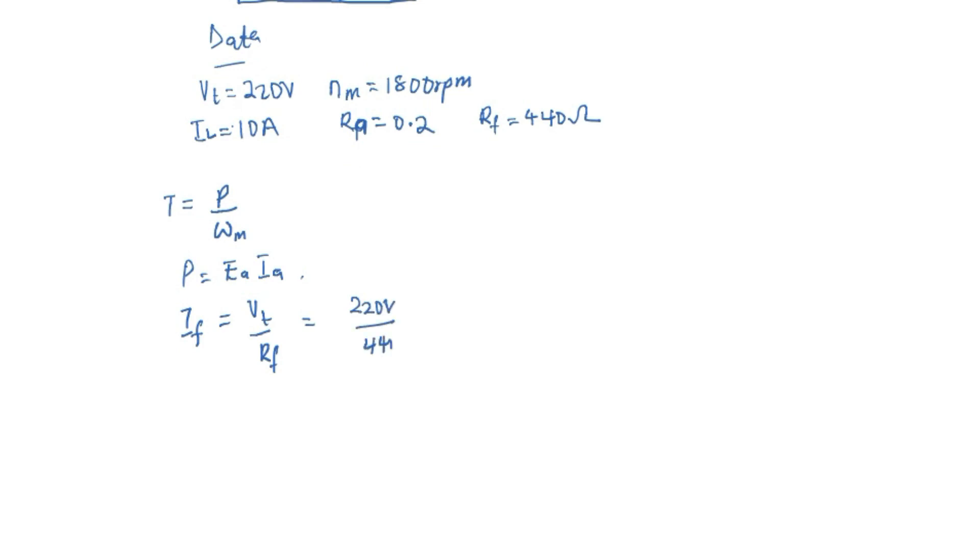Which is 0.5 ampere. So now from the current equation we know that IL equals to IA plus IF, and that means IA is going to be IL minus IF.